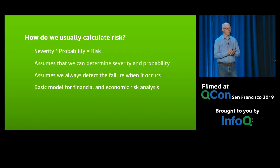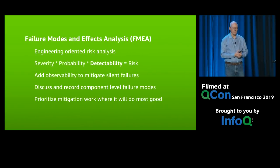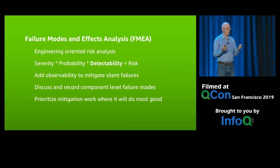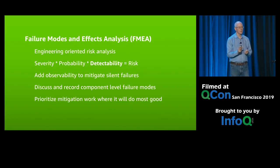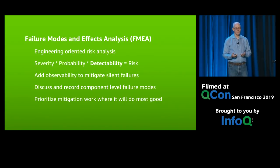We're now going to do more of a bottom-up version looking at risk. Typically, financial risk is severity times probability — multiply those together and you have some idea of risk. However, if you add engineering risk, detectability matters. If a plane crashes, you kind of know it crashed. But if there's some weird thing happening deep inside something and you can't see it, you're building up failures and risk that you can't see. One way to mitigate risk is to add observability to expose silent failures — it actually reduces risk because you can tell things are starting to happen and get in there and mitigate before it takes you out.